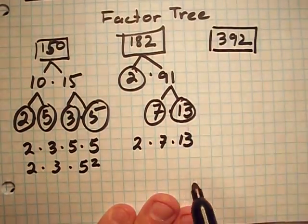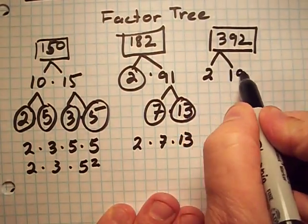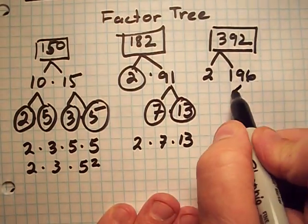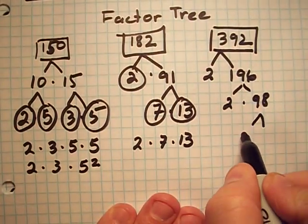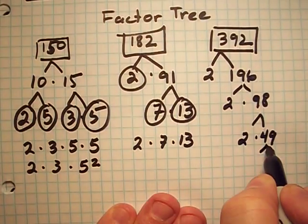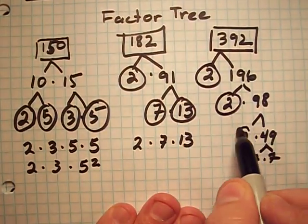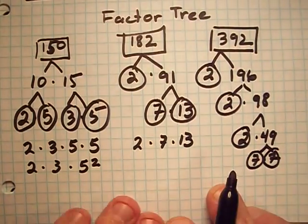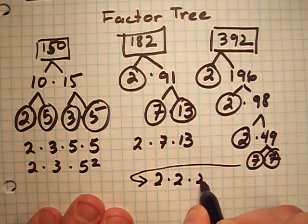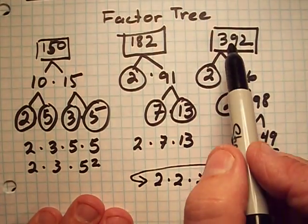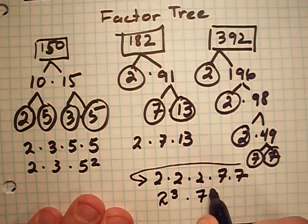Let's look at 392. Again, I'll start with a prime number: 2 times 196. Then 196 is 2 times 98. Then 98 is 2 times 49, and 49 is 7 times 7. So my prime factors are 2, 2, 2, 7, and 7. I can write that as 2 times 2 times 2 times 7 times 7, or 2 to the 3rd times 7 squared.